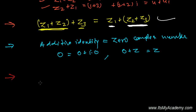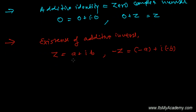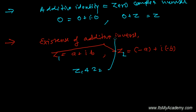The last thing is the existence of the additive inverse. If Z equals a plus iB, then there exists an additive inverse of Z, which is minus Z, and that equals minus a plus i times minus B. So Z and minus Z are called the additive inverses of each other.